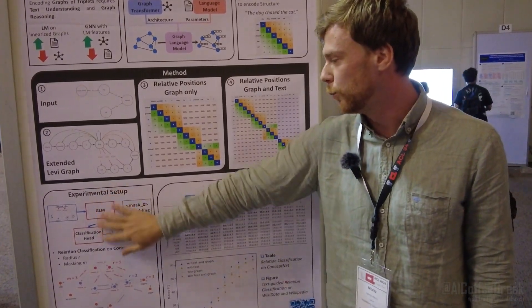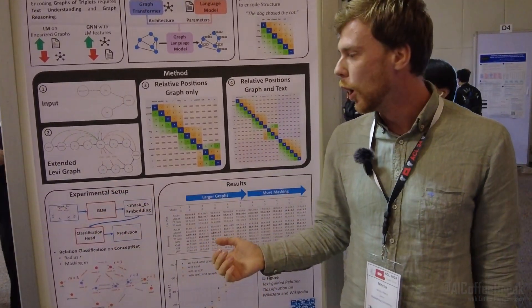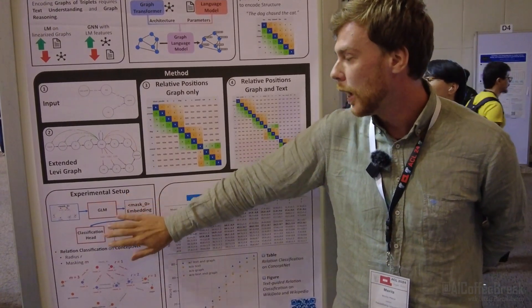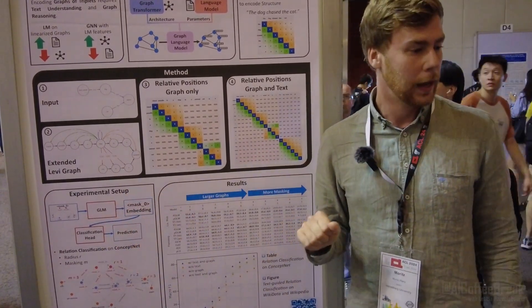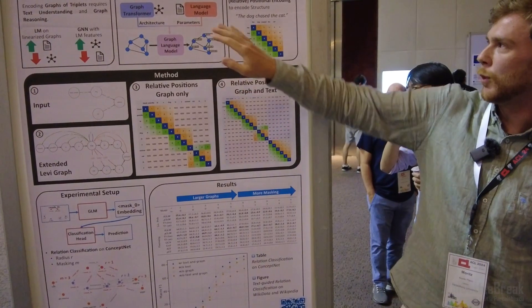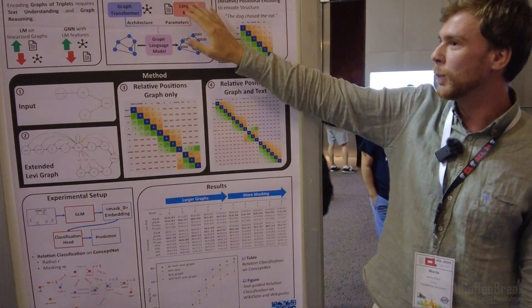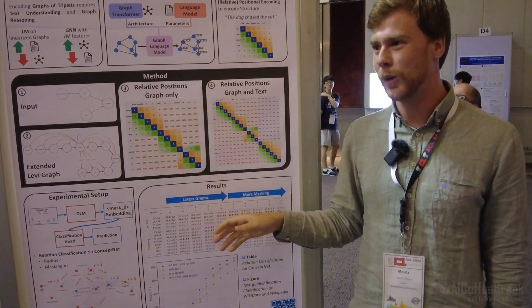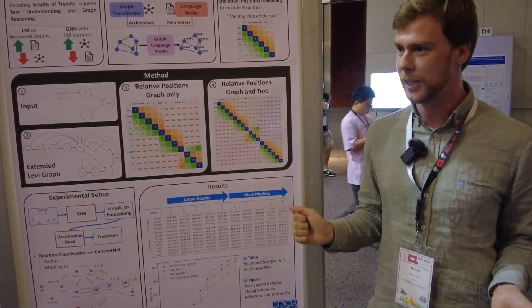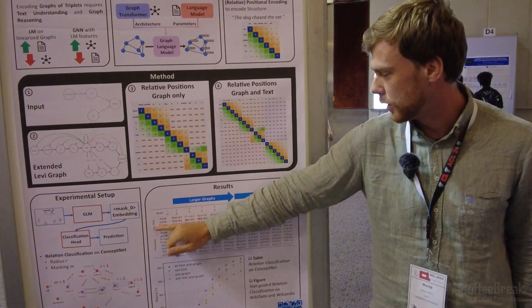We can do two things: either fine-tune both completely in a normal setting, or freeze the graph language model parameters and only train the classification head. In this setting, the parameters come from a language model—in our case T5, the encoder of T5—we put them in a new architecture and apply them to graphs, something the parameters have never seen before. This is what we do in the linear probing setting.